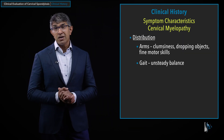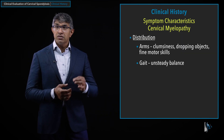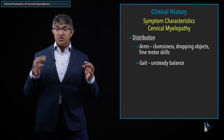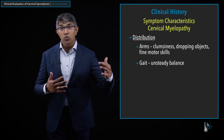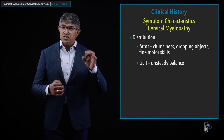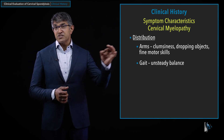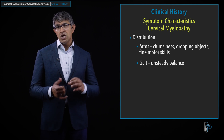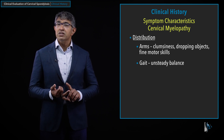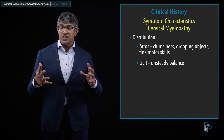Myelopathy can also affect the lower extremities. In the lower extremities, people have problems with gait balance — they feel unsteady, like they're drunk when they're walking. So the first thing I ask about is the distribution of these symptoms: do they have involvement in the arms, involvement in the legs, etc.